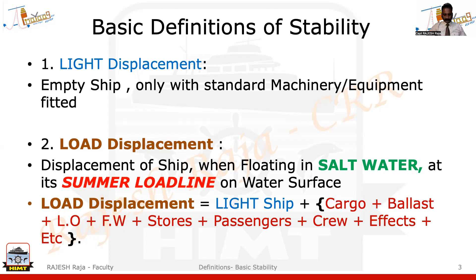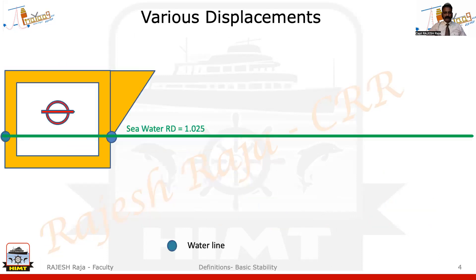I can give you a small equation: load displacement equals light ship plus whatever you loaded — which can be cargo, ballast, lube oil, fresh water, stores, passengers, crew and effects, etc. So when you have a light ship and you load all these items, you end up at load displacement, provided you are in salt water and the water line exactly matches your summer load line.